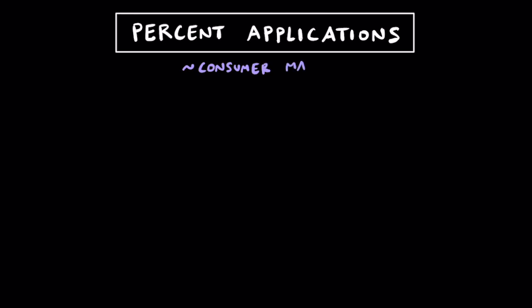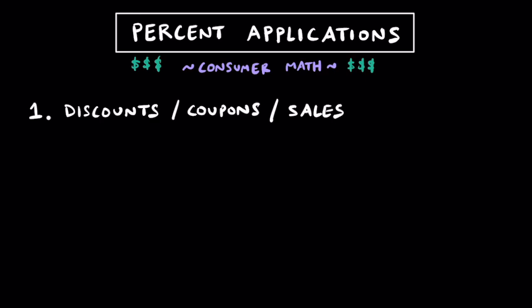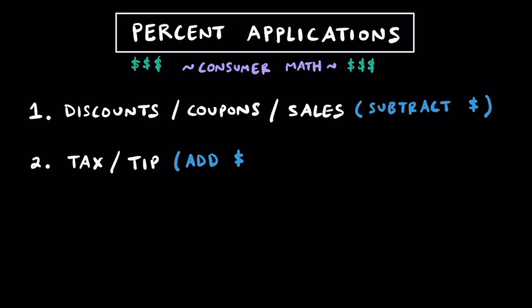While there are a lot of applications of percents, in this video we're specifically going to be talking about consumer math — and by that, we're going to be talking about money. Whether you're shopping, buying things in general, or going out to eat, having a good understanding of percent applications will help you make better decisions about what kind of discounts you're getting and what kind of taxes you might be paying. This video is broken down into two general topics: first, discounts, coupons, and sales where you're saving money; second, percentages that are additional costs you have to pay, like tax and tip. Just keep in mind that some percentages are meant to be subtracted where you save money, and other percentages are meant to be added where you pay additional money.